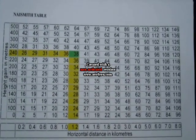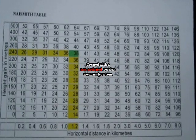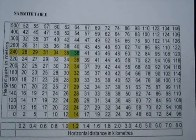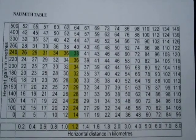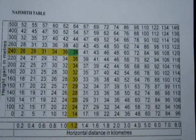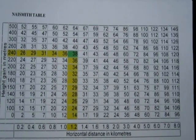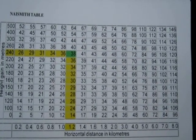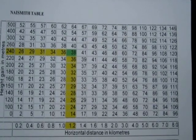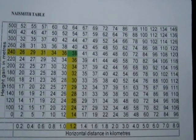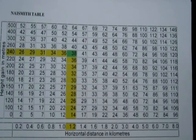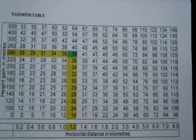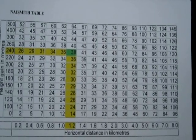Obviously this will change depending on your group's fitness, the length of the day's walk, and the load you are carrying. In order to assess the group's fitness you can use Tranta's correction, which allows you to adjust Naismith's rule appropriately. However, as a mountain leader you don't always have this time and sometimes you just have to assess your group's fitness along the way.